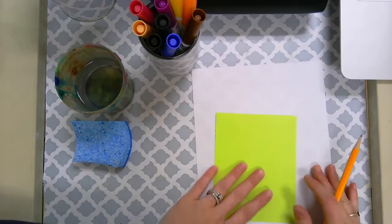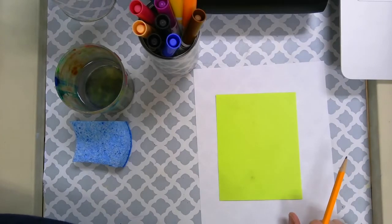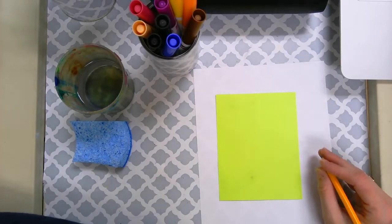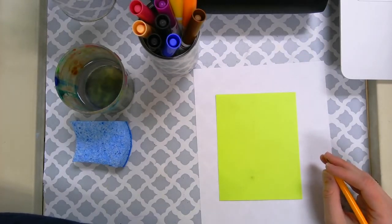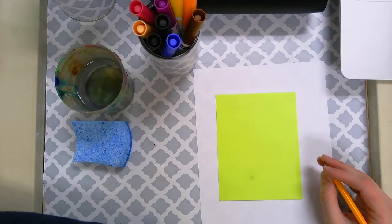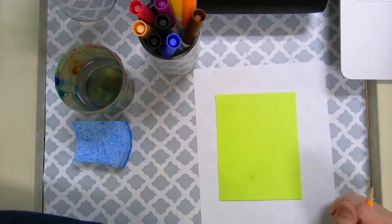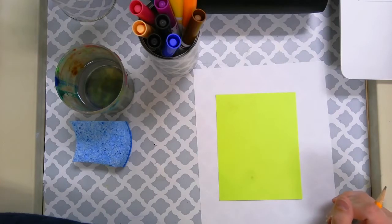So the first thing you want to do is just think of something that you would like to create as a repeating design. You can do anything from unicorns to rainbows to lines. One suggestion is I would not do any letters because if you print letters they're gonna print backwards. So I would just do shapes, designs, something fun you like.